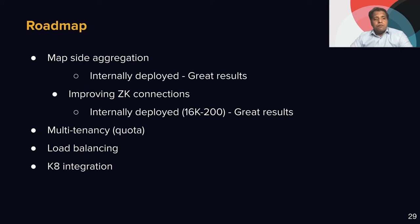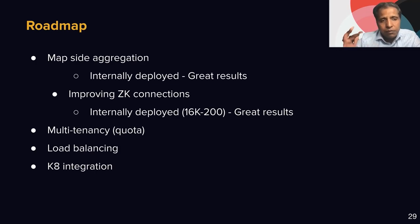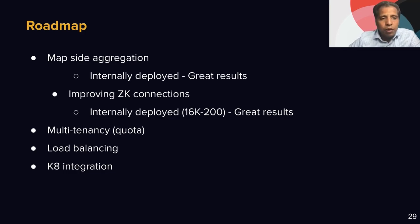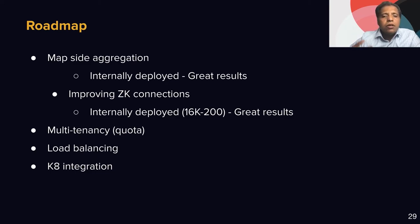On the roadmap, we are still improving ZS. We have added map-side aggregation — the runtimes of jobs with map-side aggregation were not on par, so we added this feature internally, with great results, and we are going to upstream it very soon. We improved the ZooKeeper connection, moving from 16,000 connections down to 200, with great results. We are also working on multi-tenancy, load balancing, and gate integration internally.